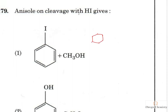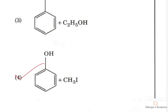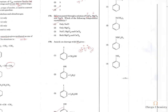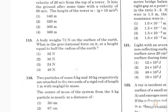Question 162: Anisole on cleavage with hydrogen iodide. Anisole is an aromatic ether with an –OCH₃ group. HI is a strong acid that protonates anisole, placing a partial positive charge on the oxygen carbon. Since the carbon bonded to the benzene ring cannot be attacked, the iodide ion attacks the methyl carbon, cleaving the C–O bond. This gives phenol and methyl iodide. Option 4 is the right answer.